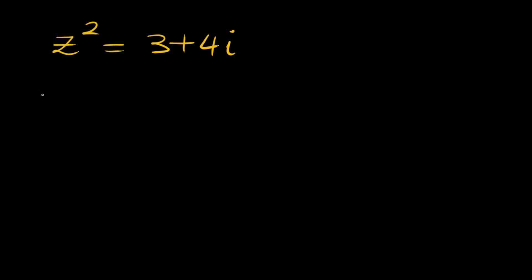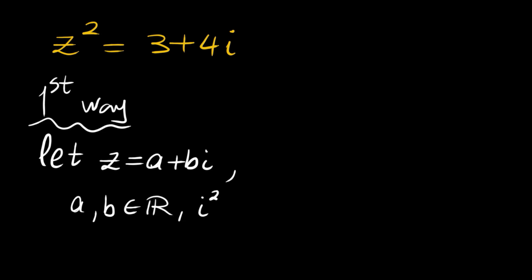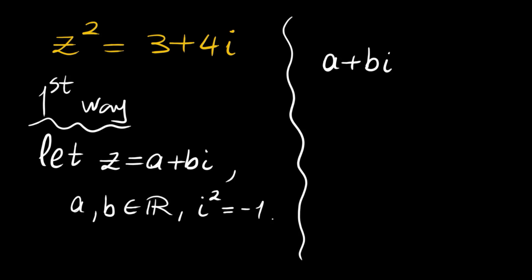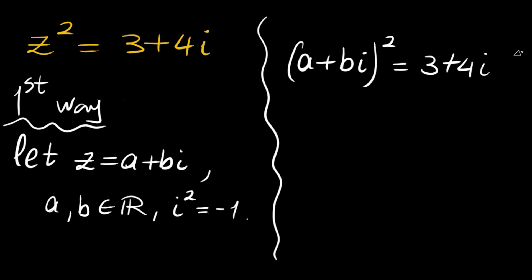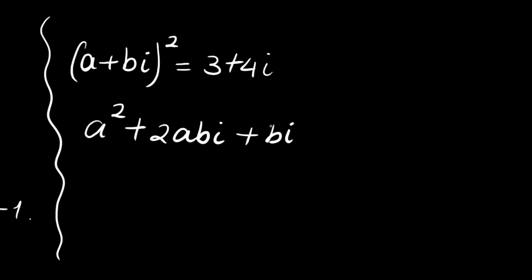Let me show you the first method. Let z be some a plus bi, any complex number, where a and b are real numbers and i squared is negative 1 by definition. Plugging into the equation, we have a plus bi, all squared, equal to 3 plus 4i. Expanding, we get a squared plus 2 times a times bi plus bi all squared, equal to 3 plus 4i.